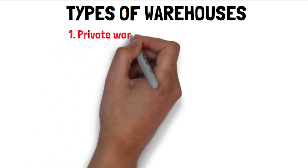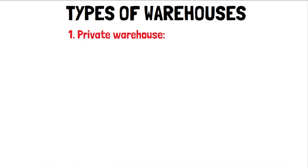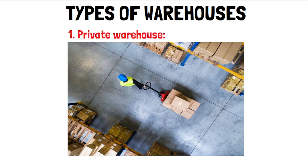The first type of warehouse is the private warehouse. Private warehouses are owned by private organizations or individuals to store their own goods — for example, Flipkart has its own warehouse. These warehouses are often used for multi-branding purposes, storing goods divided into many categories and varieties, like Flipkart which carries an A-to-Z range of goods.